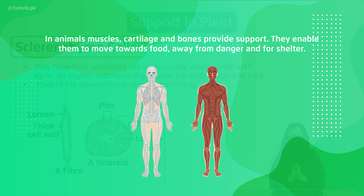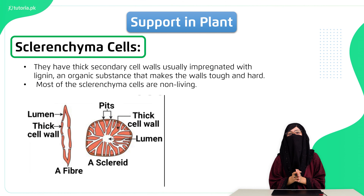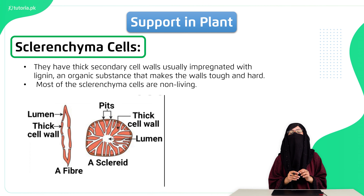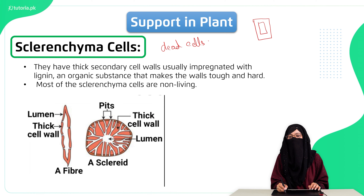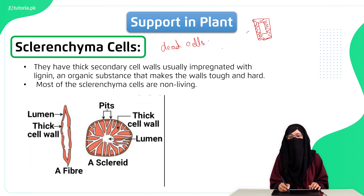If I talk about plants, there are two important cell types that play an important role. First, we call them sclerenchyma cells. These sclerenchyma cells are basically dead cells and these plants are lignified. If I draw them, the plant cell wall has a lot of material deposited inside. That's why we call them dead cells. These are further divided into fibers, sclerenchyma cells, and vessels.